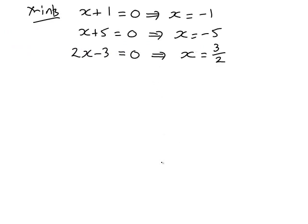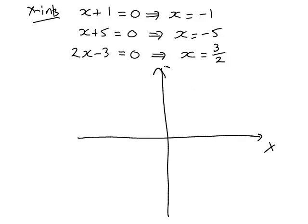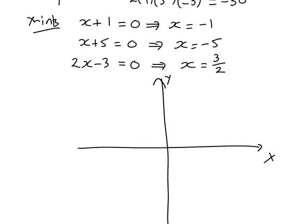So let's set up our axes to draw those on and then we'll look at how the graph is going to behave. So we saw y-intercept negative 30. That will be down here somewhere. And looking at our x-intercepts, we have an x-intercept at negative 5, another one at negative 1, and one at 3 divided by 2, which will be approximately there.